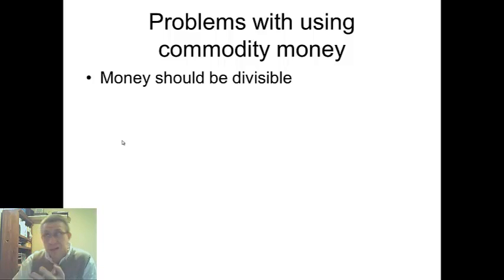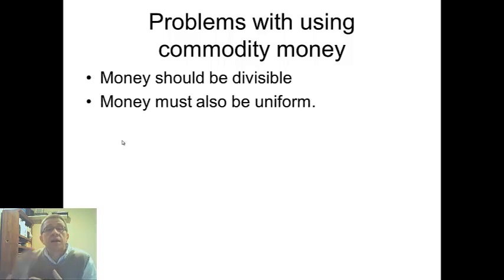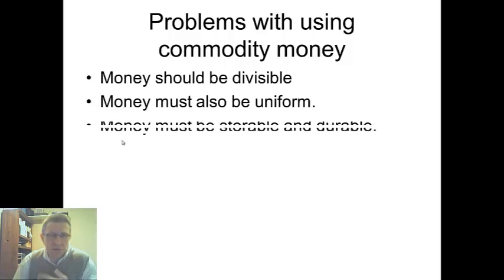If you want commodity money to be ideal, the money should be divisible. Well, unless you're looking for dinner, the cow is not going to work too well for that. It should also be uniform, so everything should be the same. If we talk about cigarettes, we might be okay here. You can divide a pack into 20 cigarettes. Each cigarette is relatively uniform in quality.